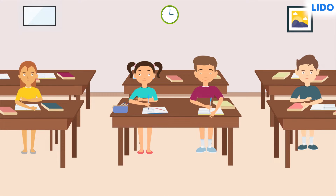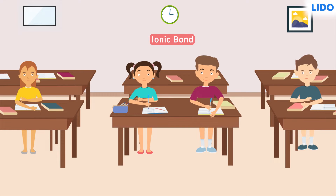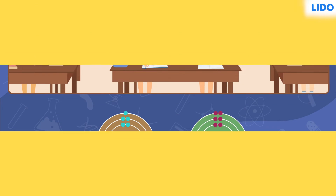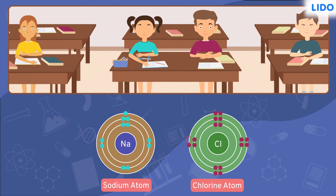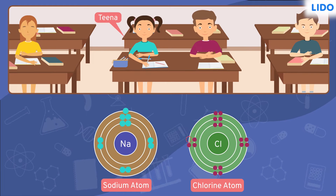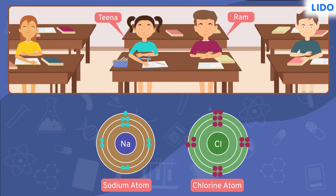This reminds me of the ionic bond between different compounds. Puzzled? Let me explain. Consider sodium and chlorine atoms as Tina and Ram.